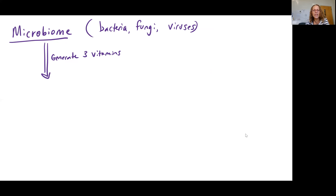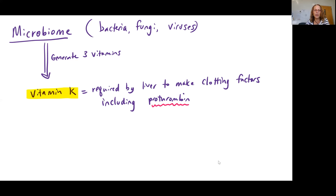So it is an important part of your body to have this group of bacteria and viruses and fungi taking up residence in your large intestine. And they're actually helping you to get some key nutrients and vitamins from your food. So there are actually three vitamins that are being produced with the help of your microbiome.